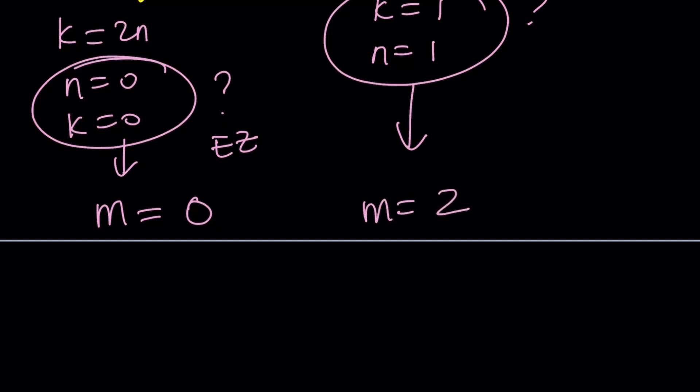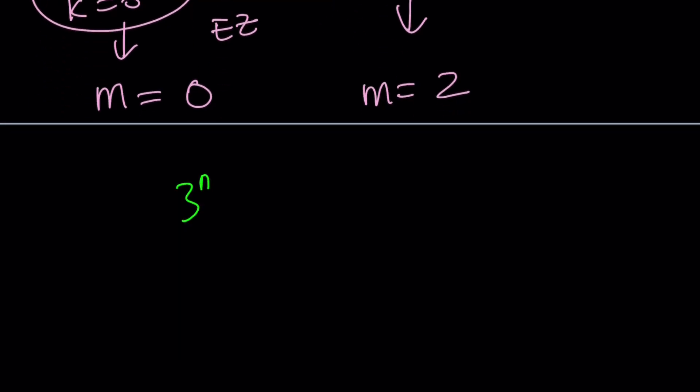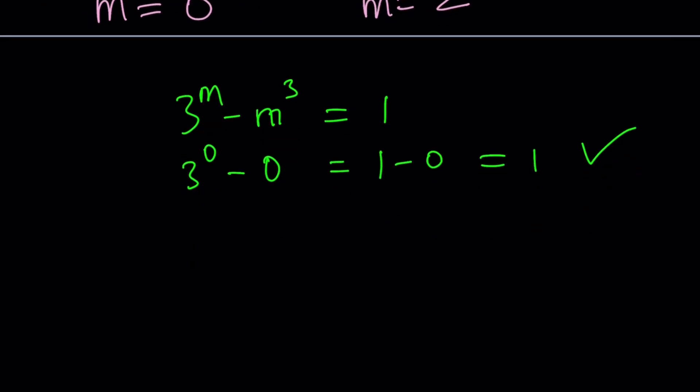Now, let's go ahead and check these values out with our original problem, and then we'll finish. Just hang in there. Not done yet. Let's go ahead and check it out. If M is 0, we get 3 to the power of 0 minus 0, which is 1 minus 0, which is 1. Awesome. That checks. With M equals 2, we get 3 to the second minus 2 cubed, and that's equal to 9 minus 8, which is equal to 1. That also checks.